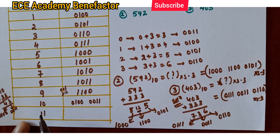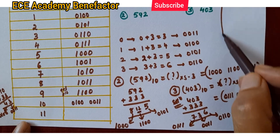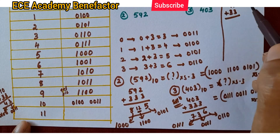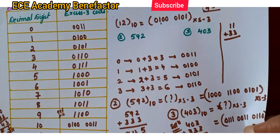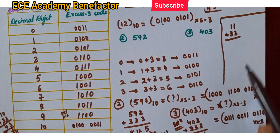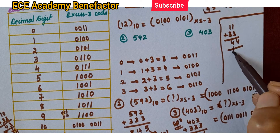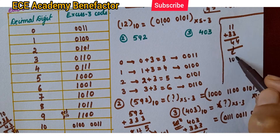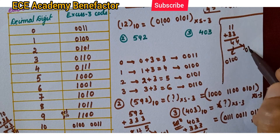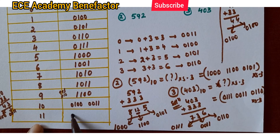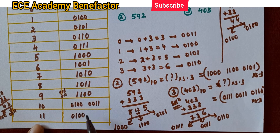For 11, add 3 to each digit: 1 plus 3 equals 4, and 1 plus 3 equals 4. 4 in binary is 0100. So for 11 decimal in XS3, the answer is 0100 0100.